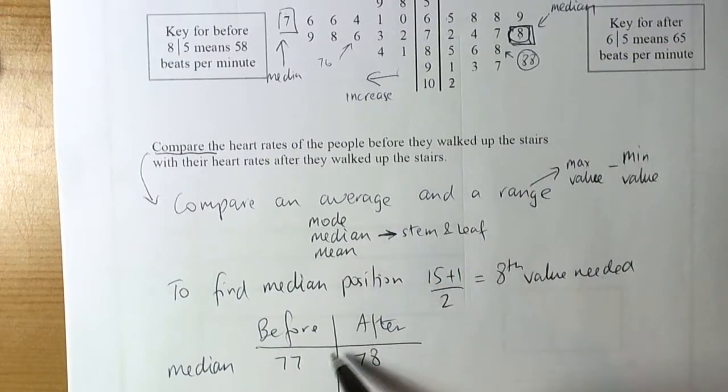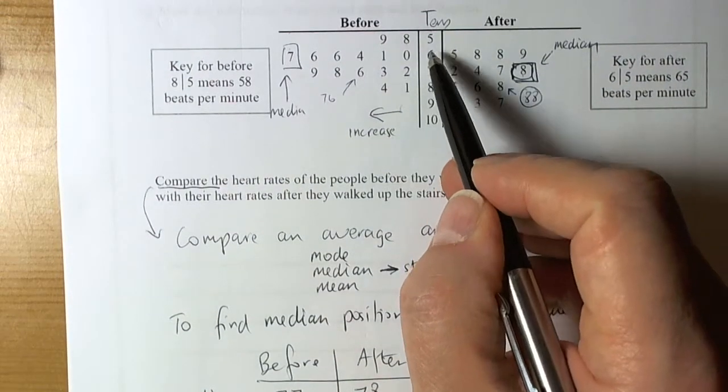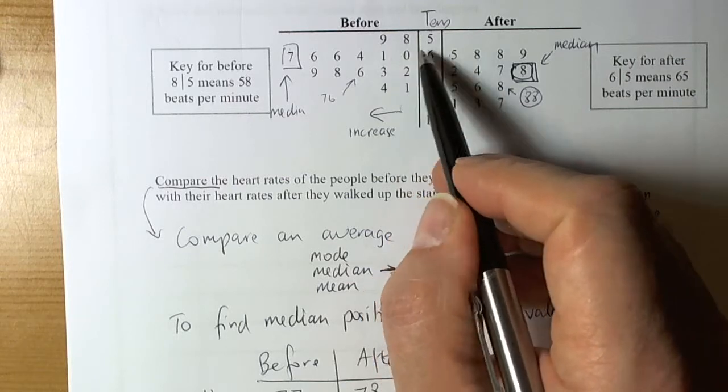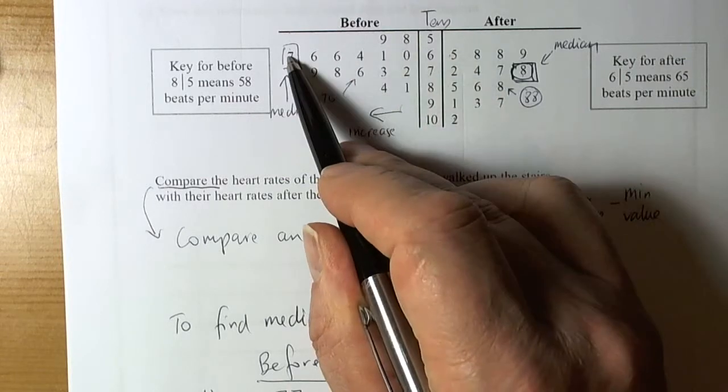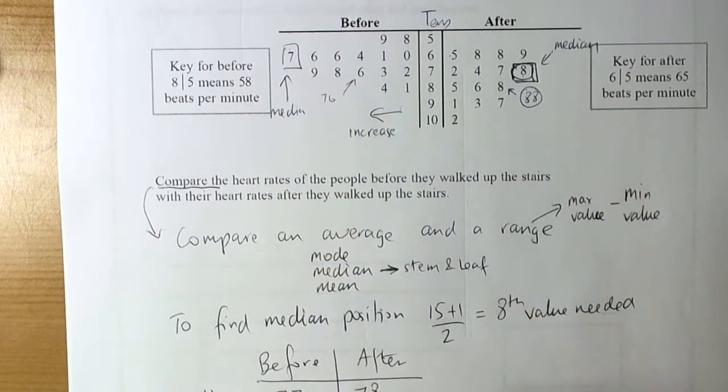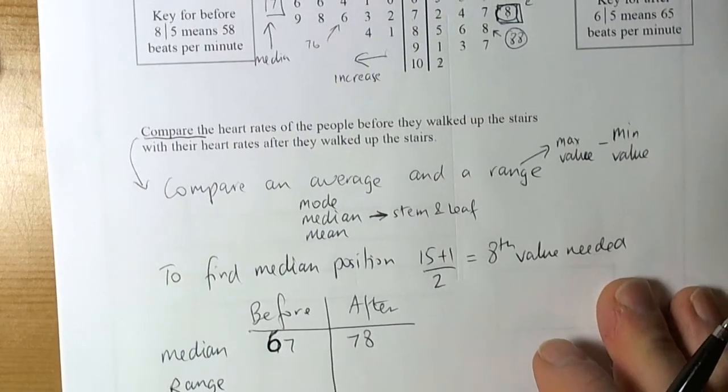So I've got to go back to the table because I've just realized that this had 60 at the front. So it's 60, 61, 64, 66, 66, 67. Always check yourself. So that should be 67.